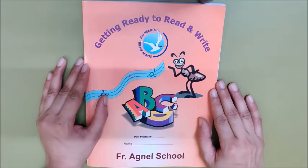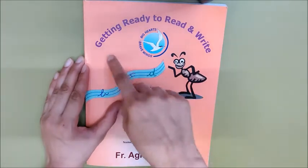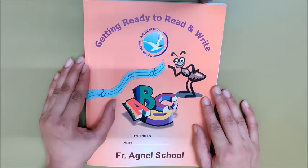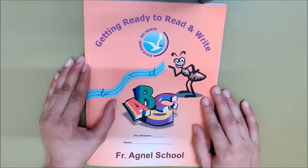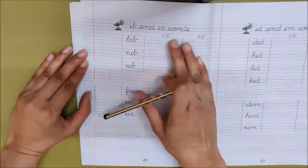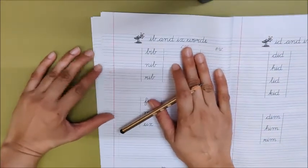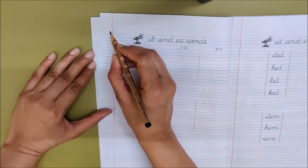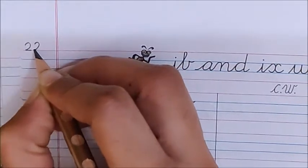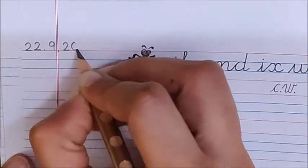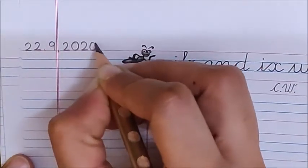What do you have to do today? Today you have to do writing of words in your orange book, Getting ready to read and write. Open page number 20, two tenths 20. See children I have opened page number 20. We will do this page. So children write down today's date here. Today is September 22, 22 dot 9 dot 20, 20.